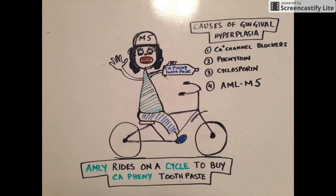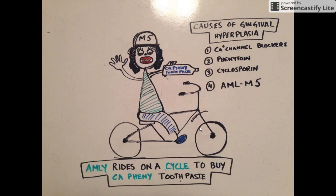Let's repeat it again: Emily stands for AML M5; she rides on a cycle — cycle stands for cyclosporine; to buy a 'Calcium Fenni Toothpaste' — calcium channel blockers and phenytoin. These are all the conditions associated with gingival hyperplasia.